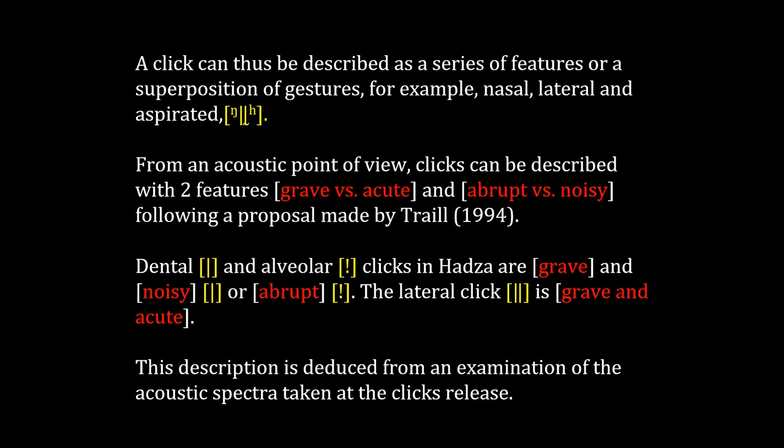A click can be described as a series of features or a superposition of gestures — for example, nasal, lateral, and aspirated — as displayed here for the lateral click. From an acoustic point of view, clicks can be described with two features, grave or acute and abrupt or noisy, following a proposal made by Tony Traill in 1994.